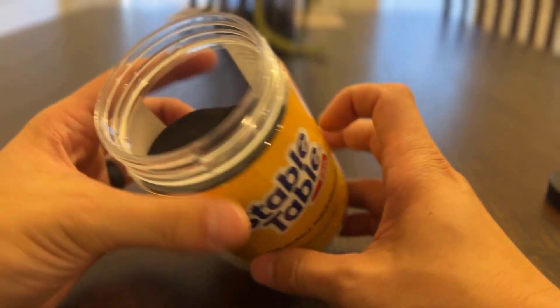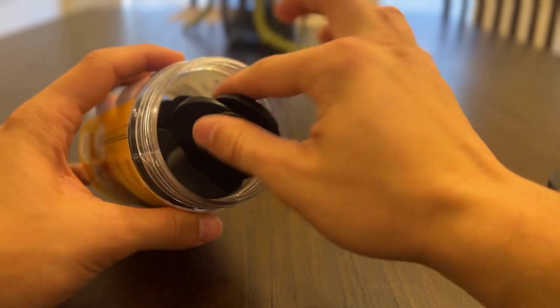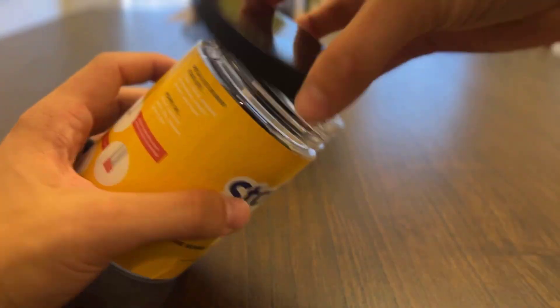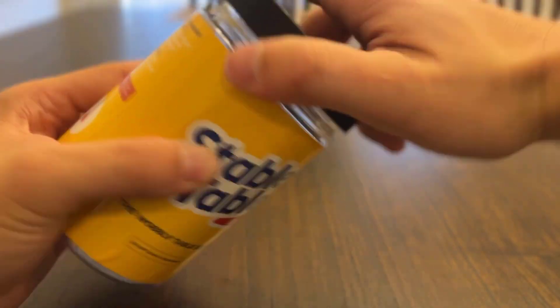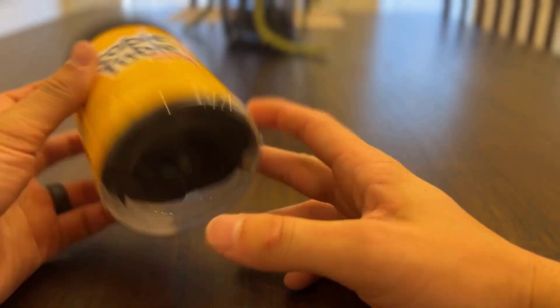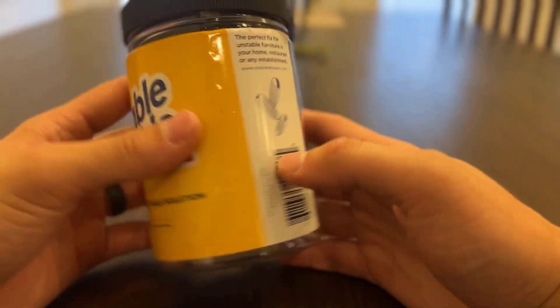But this comes with a ton of them in there, so I mean you've got plenty to put under all your furniture if you needed to. And it also comes in this nice little handy bottle that screws on, so if you want to store it somewhere very easily, you can. Highly recommend this.